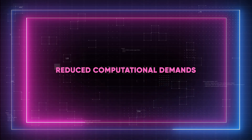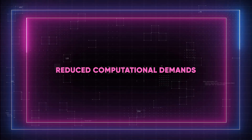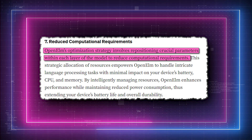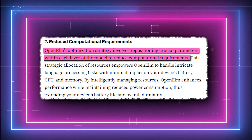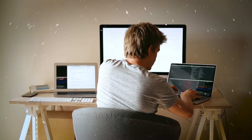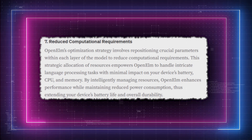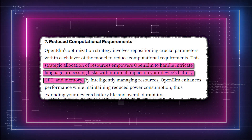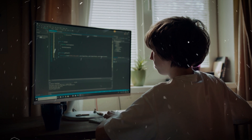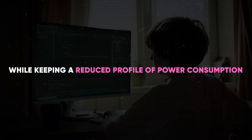Moving on to number eight: reduced computational demands. Open ELM's optimization strategy involves relocating important parameters within each layer of the model to reduce computational demands, increasing efficiency and reducing the strain on your device's processing power. This allows Open ELM to perform complex language processing tasks while minimizing the drain on your device's battery, CPU, and memory. In short, you can achieve high performance with Open ELM while keeping a reduced profile of power consumption.